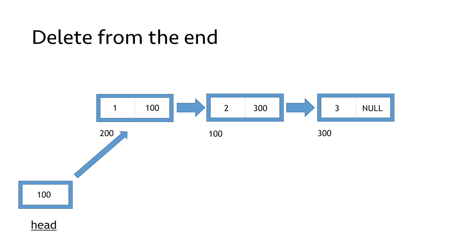Now let's see how we can delete a node from the end of our linked list. Suppose this is the linked list given to us and we have to delete its last node, that is the node containing value 3. To delete this node we have to do two things: first, traverse to the last node, and second, make the link part of its previous node — the second last node — as null. For this purpose we take two pointers, ptr and priv, where priv keeps track of the previous node to ptr.